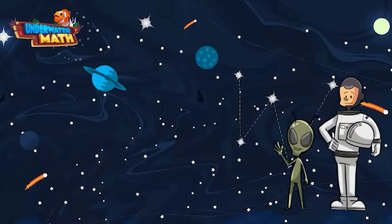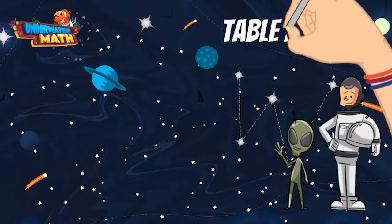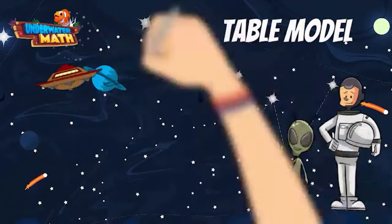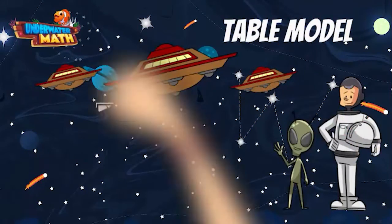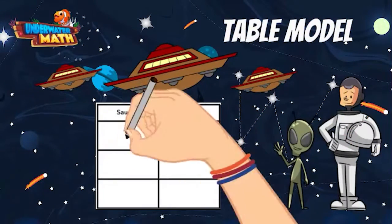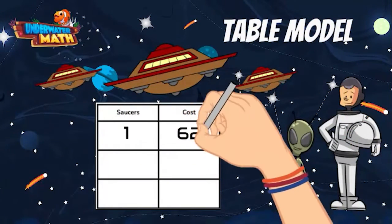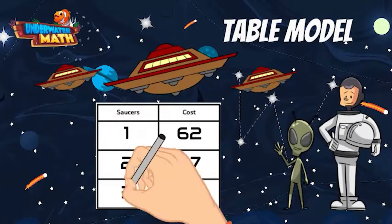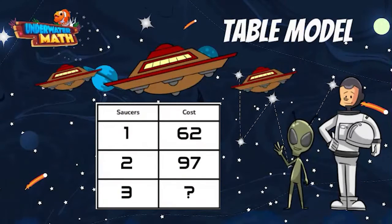Another strategy to represent two-step problems is using a table. Lenny had to buy new saucers for his family. The first flying saucer cost $62. The second saucer cost $97. His total bill was $614. We can use this table to help model this problem and develop an equation to solve for how much the third saucer cost.